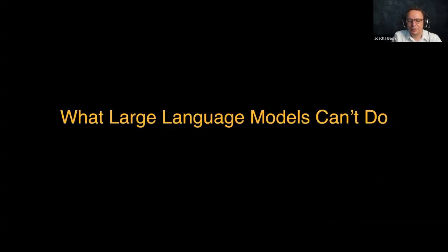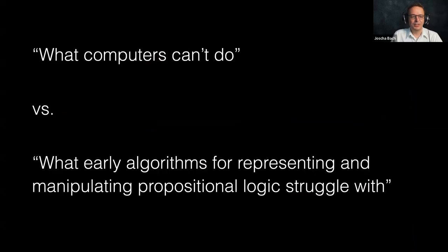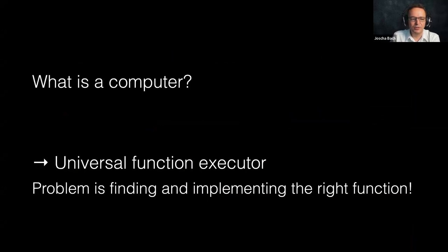This reminds us of the question 'what computers can't do.' In 1972, philosopher Hubert Dreyfus wrote an influential book describing what computers cannot do. When I read this book, I found that even at that point, a lot of those things were already being actively worked on. Dreyfus updated it — 'what computers still can't do' — and even had a third edition. But it was in some sense erased, because he basically looked at what early algorithms for representing and manipulating propositional logic struggle with. A computer is a far more general thing than what existed in the applications and implemented algorithms at the time he wrote the book.